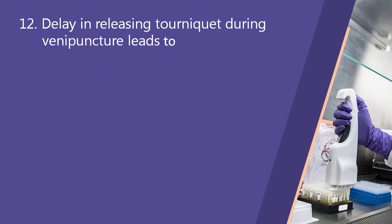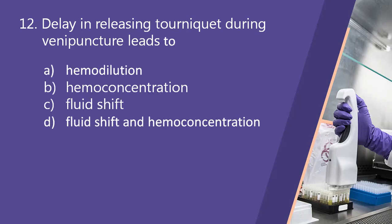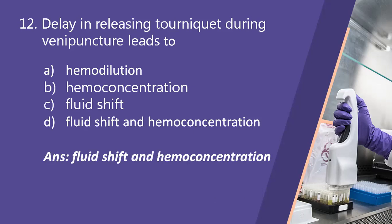Next question: delay in releasing a tourniquet during venipuncture leads to? Option A, hemodilution. Option B, hemoconcentration. Option C, fluid shift. Option D, fluid shift and hemoconcentration. The right answer is option D, fluid shift and hemoconcentration. Hemoconcentration means increase in concentration of blood cells. Prolonged tourniquet time leads to blood pooling at the venipuncture site, causing fluid shift and increased hemoconcentration. The maximum tourniquet time is 1.5 to 2 minutes.